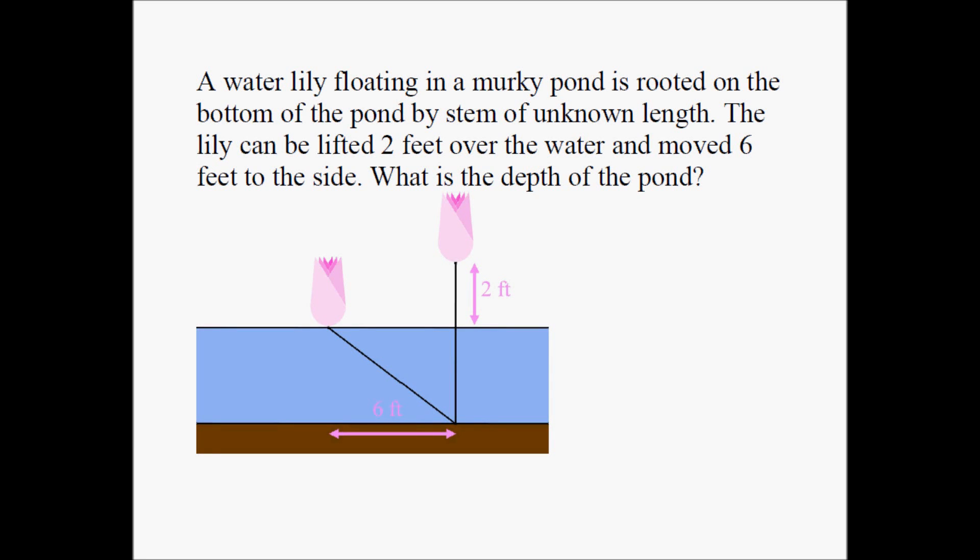Here is an old Chinese problem. Let's read the question and see if we can solve it. A water lily floating in a murky pond is rooted on the bottom of the pond by a stem of known length. The lily can be lifted 2 feet above the water and moved 6 feet to the side. What is the depth of the pond?